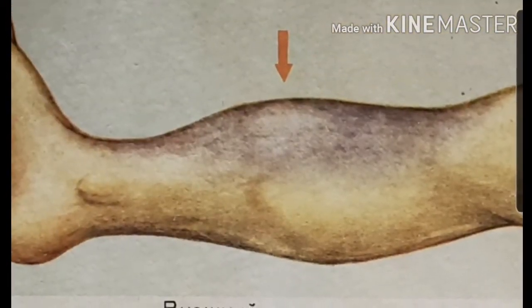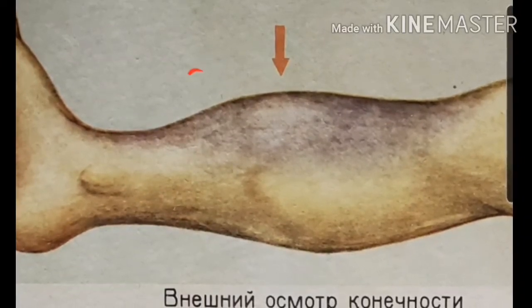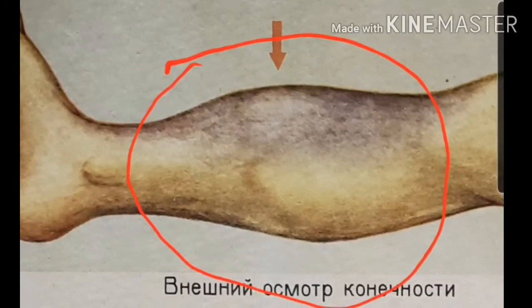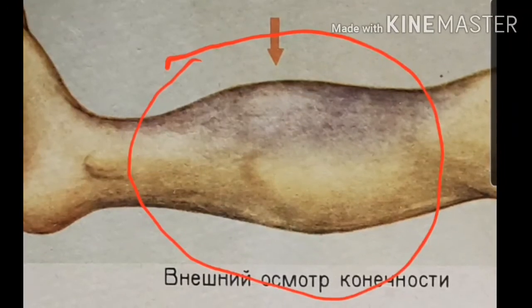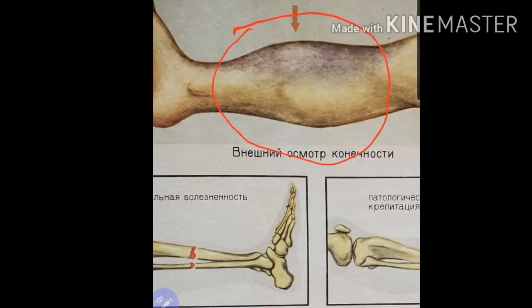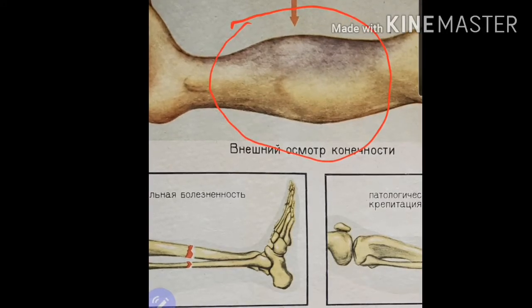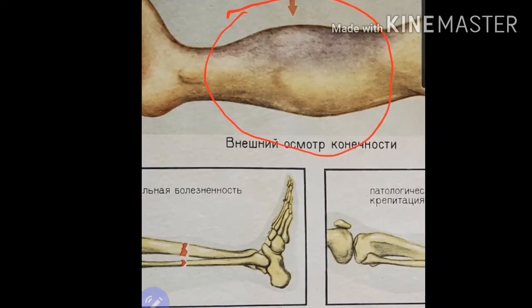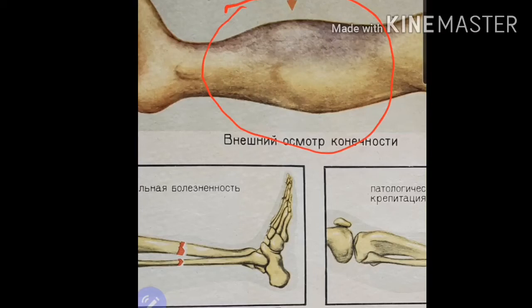If you look locally at the fracture site you will see that there is some bruising, hematoma, and swelling at the fracture site. Usually these are very common clinical signs for injuries. To confirm whether there is a fracture, we have so-called verifying clinical signs, which will help you to make the diagnosis.